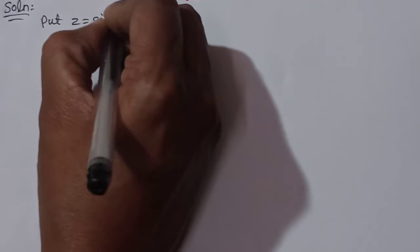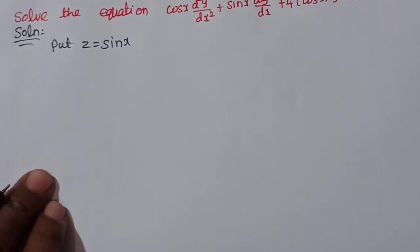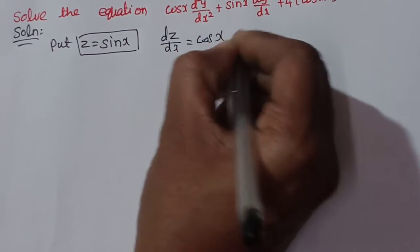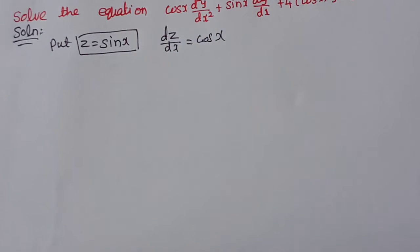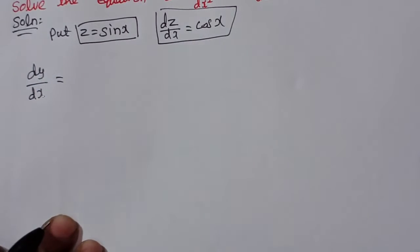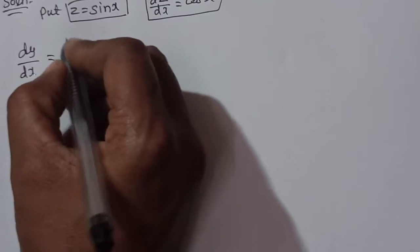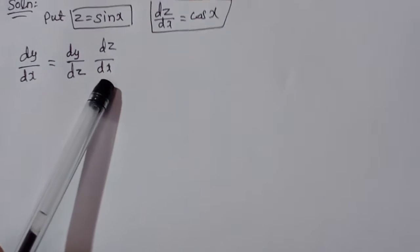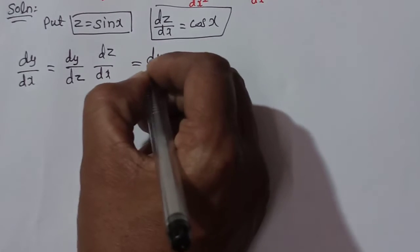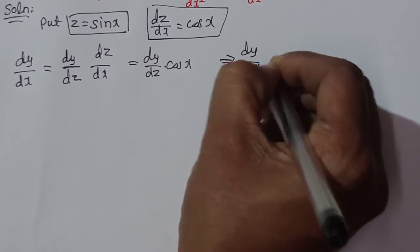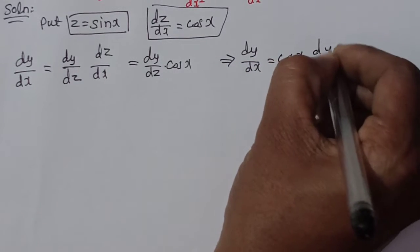We substitute z = sin x. Differentiating z with respect to x: dz/dx = cos x. Now for dy/dx, we multiply and divide by dz, giving dy/dx = (dy/dz) · (dz/dx). Substituting dz/dx = cos x, we get dy/dx = cos x · dy/dz.